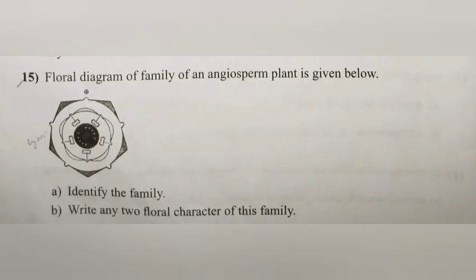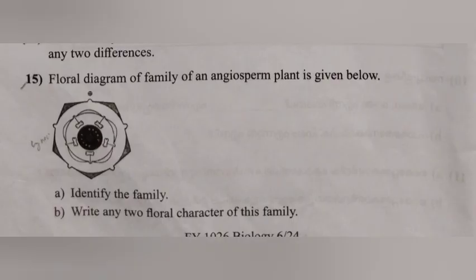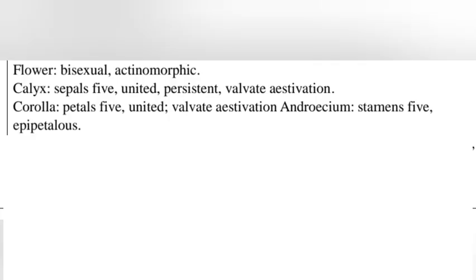Question 15: A floral diagram of an angiosperm plant family is given below. (A) Identify the family. Answer: Solanaceae. (B) Write any two floral characters of this family. Answer — Flower: bisexual, actinomorphic; sepals: five, united, persistent, valvate aestivation.